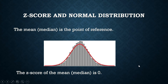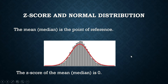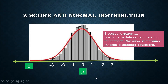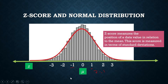The Z-score is a measure of relative position — it's the position of a data value in relation to another, and that other value is the mean. The mean has a Z-score of 0. So if the Z-score of a data value is 1, that means it is one standard deviation from the mean. If the Z-score is negative 1, that means it is one standard deviation below the mean.